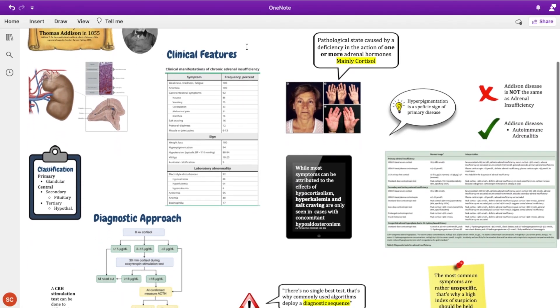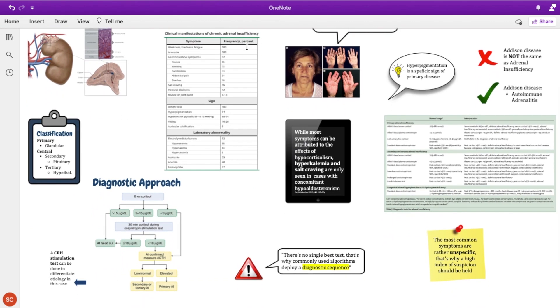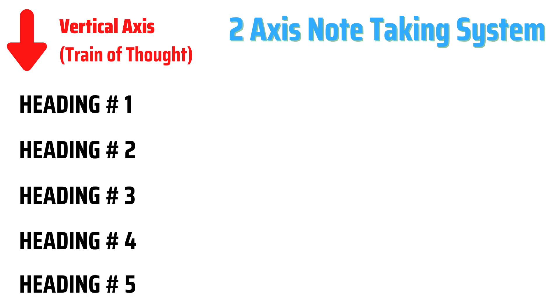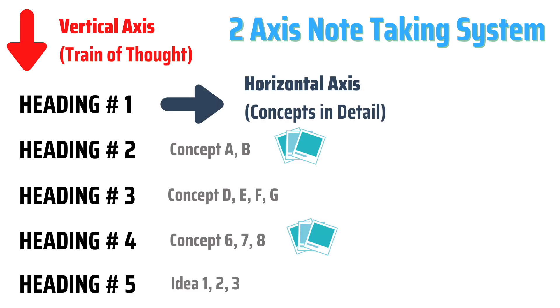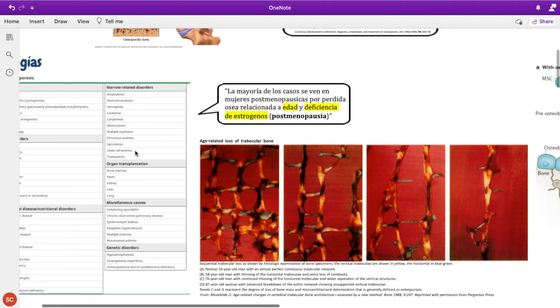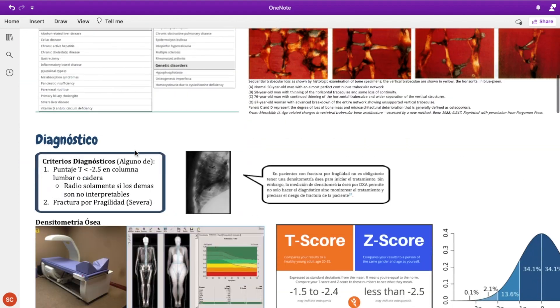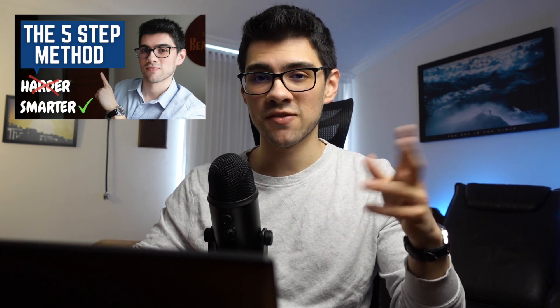Finally, step number three is having an organization system, because you can have all of the fonts and PNGs you like, but if your notes are disorganized they're just going to look awful and finding information will be so much harder. There are plenty of organization systems out there. The one I recommend and use is a two-axis note-taking system where you place all the headings vertically and fill them with information horizontally. This system works great in OneNote since you can take full advantage of the infinite space available. It has other learning benefits as well, which I discuss more thoroughly in my 'How I Learn Medicine' video, linked in the corner and in the description.